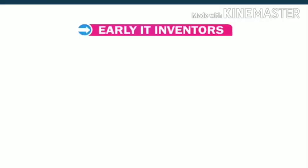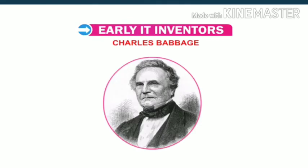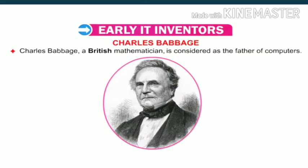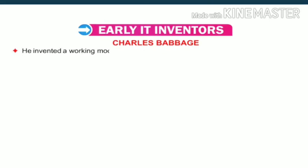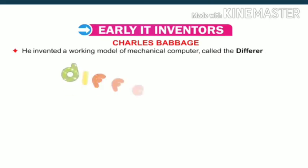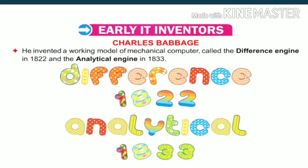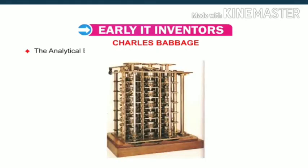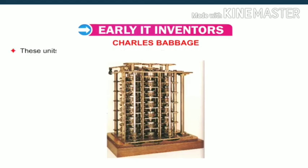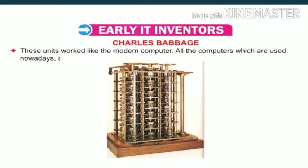Now let's talk about early IT inventors. Charles Babbage, a British mathematician, is considered as the father of computers. He invented a working model of the mechanical computer called the Difference Engine in 1822 and the Analytical Engine in 1833. The Analytical Engine had five units: input, output, store, mill and control. These units work like the modern computer, and all the computers used nowadays are based on it.